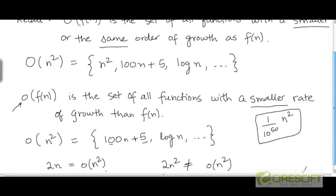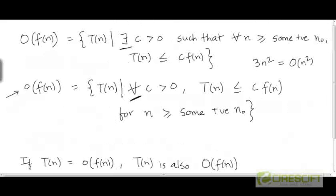So it doesn't matter what constant we choose. For all constants c greater than 0, c times n² is going to eventually become an upper bound for any function that is growing slower than n². That is why the difference between little-o and big-O is just this slight change: from 'there exists a constant c greater than 0' to 'for all constants c greater than 0'.